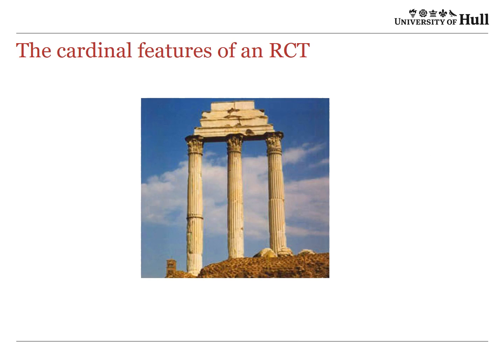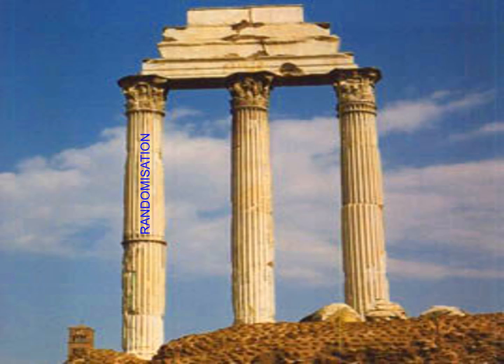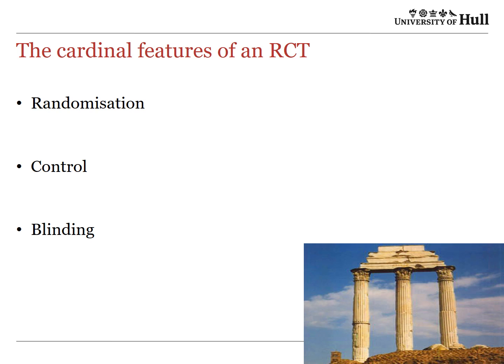The cardinal features of a randomised controlled trial — referred to from this point on as an RCT — are threefold: randomisation, control, and blinding. We'll look at each of these in turn, starting with randomisation.